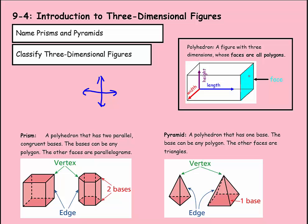Their faces also need to be all polygons. So this would be a face of the polyhedron, as would the top. You'll notice the faces of these figures are all quadrilaterals. We have two different types of polyhedrons: prisms and pyramids.